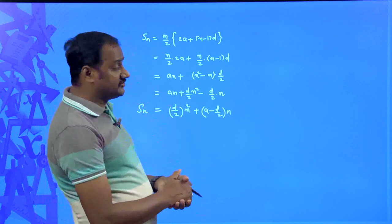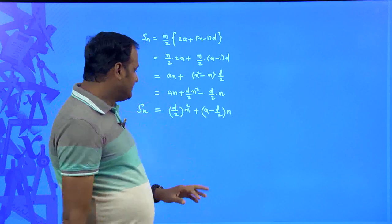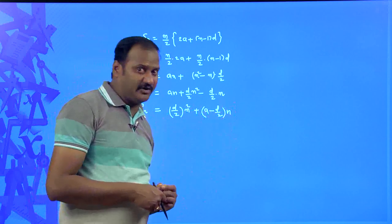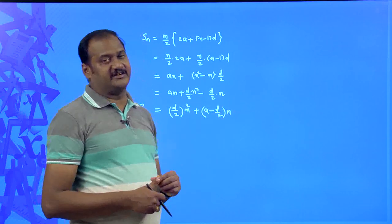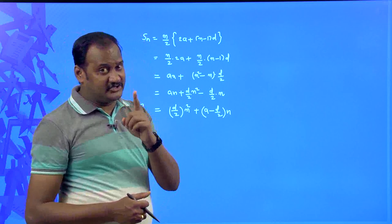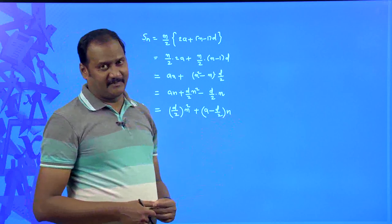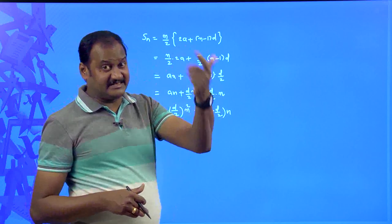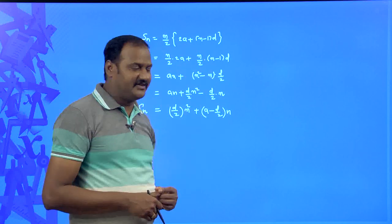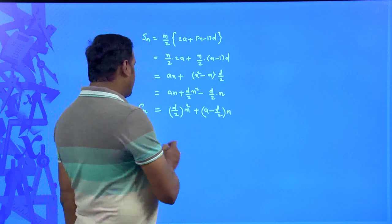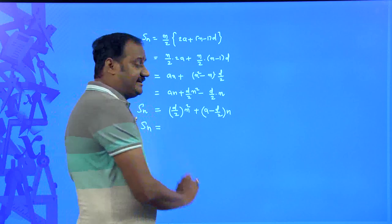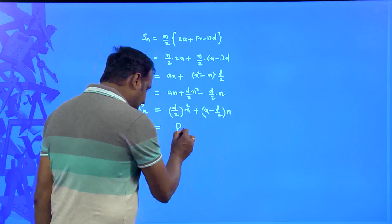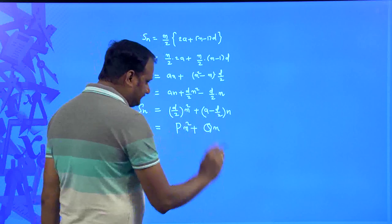So what can you say about sum to n terms of arithmetic progression? It has an n squared term and an n term — can we call it a quadratic expression, a second degree expression? Absolutely, you can call it a quadratic expression or second degree expression, but ensure there is no constant. In standard quadratic expressions you have ax squared plus bx plus c, but here the value of c is 0. So sum to n terms of an arithmetic progression is a second degree expression without a constant, of the form: something into n squared plus something into n.